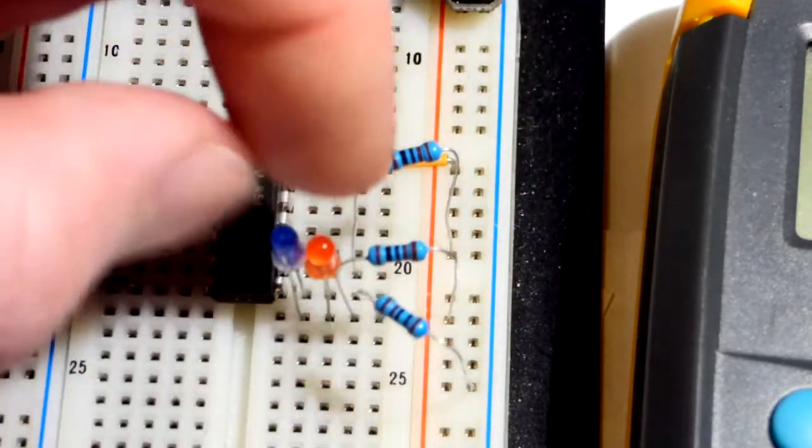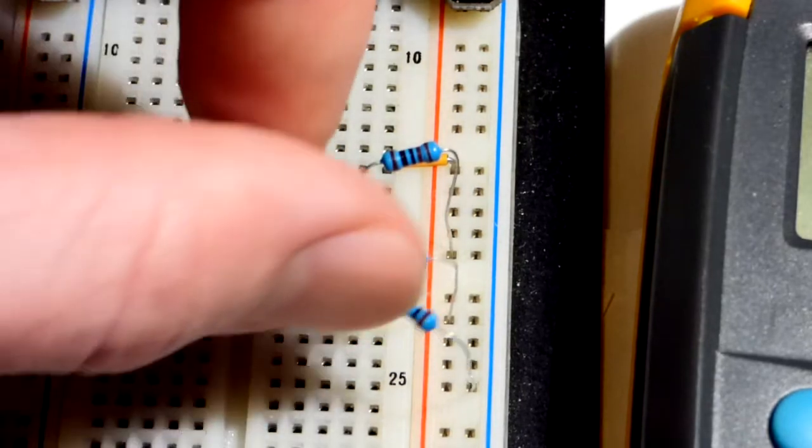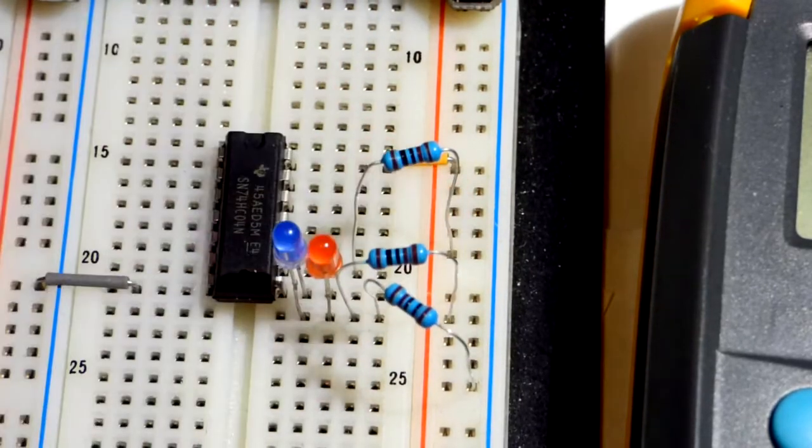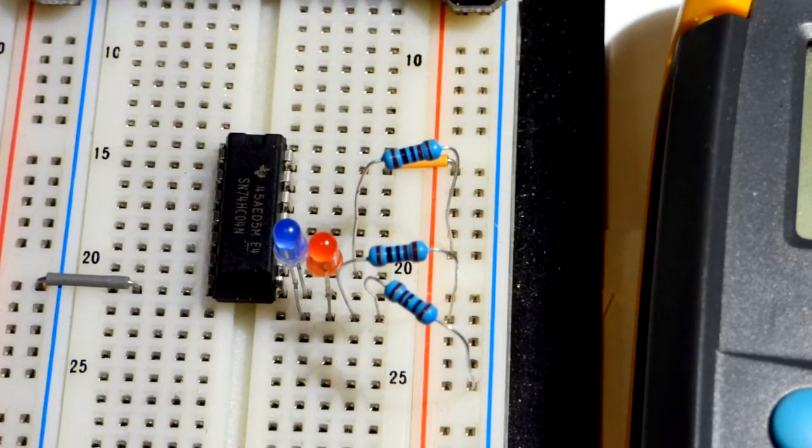Two LEDs wired in opposite directions, and then a resistor going to each side of the power supply rail. Hopefully, it was pretty easy to see that.